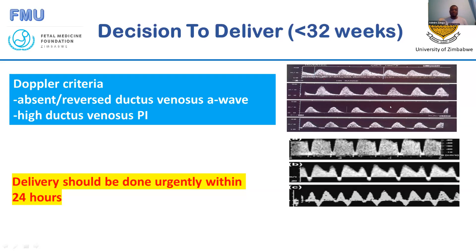If the A-wave becomes absent or reversed, then delivery is recommended urgently — within 24 hours. Usually these women will have already been administered antenatal steroids. The images on the right show deterioration of the ductus venosus Doppler from a reduced A-wave to reversal and even further reversal.